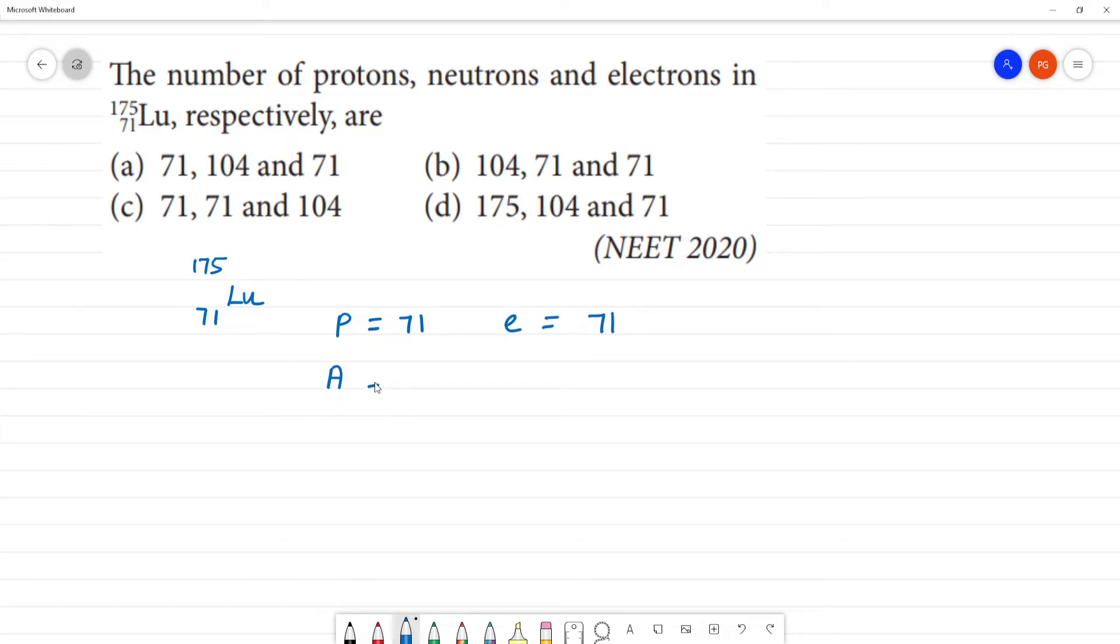Atomic mass or mass number is equal to protons plus neutrons. Mass number is 175, protons is 71 plus neutrons. So neutrons equals 175 minus 71, that is equal to 104.